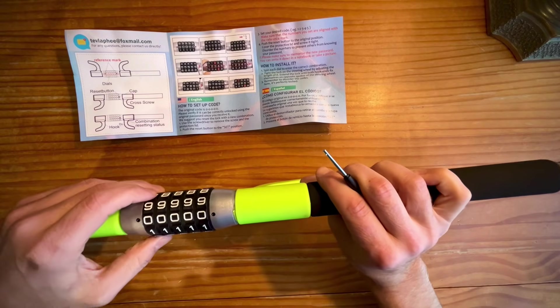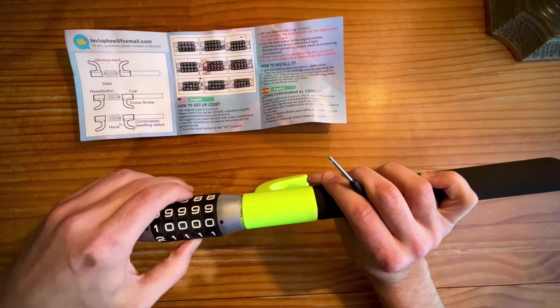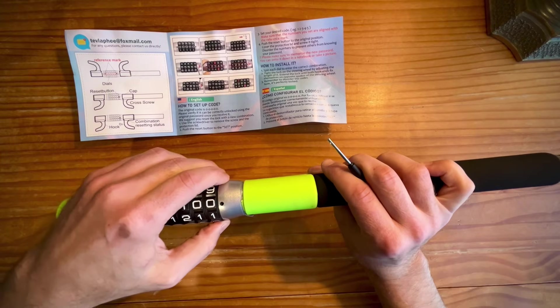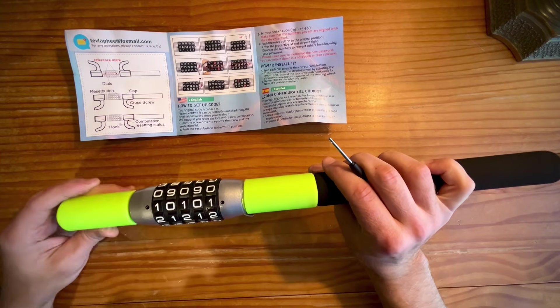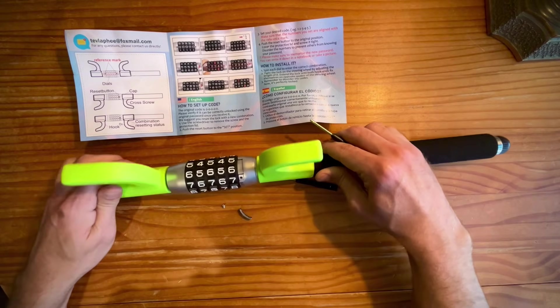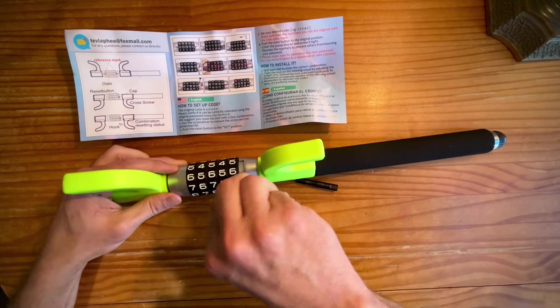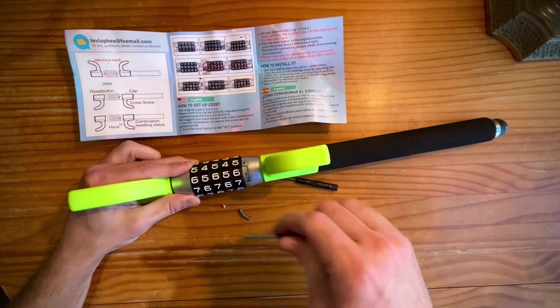So for today, let's go from all zeros to one zero one zero one and that will be the password for the remainder of this video. Again, combination is so much easier than having to keep a key. I love it. Very cool.